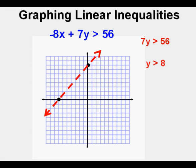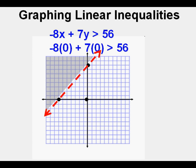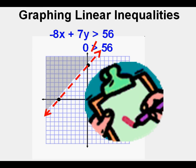We draw a dashed line since it's not equal to but greater than. And since it's greater than, we shade upward. To check the point 0, 0 — since it's in the unshaded area, it should not be in the solution set. Substituting into the original inequality: negative 8 times 0 plus 7 times 0 gives 0 is greater than 56. Is 0 greater than 56? No, it's less. Since 0, 0 is in the unshaded area, this confirms we shaded correctly. Check.